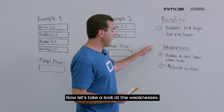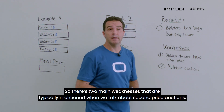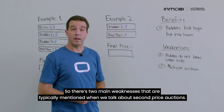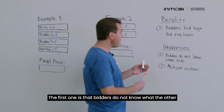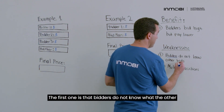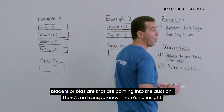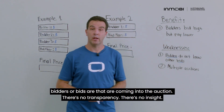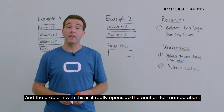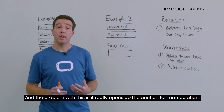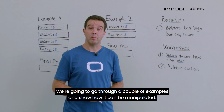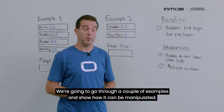Now let's take a look at the weaknesses. There are two main weaknesses typically mentioned with second price auctions. The first is that bidders do not know what the other bidders or bids are coming into the auction — there's no transparency, there's no insight. This really opens up the auction for manipulation, and we're going to go through a couple of examples to show how it can be manipulated.